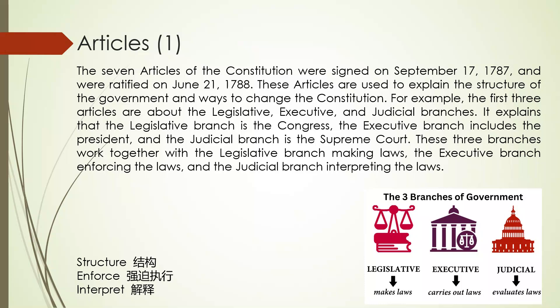正常速度. The seven Articles of the Constitution were signed on September 17, 1787 and were ratified on June 21, 1788. These articles are used to explain the structure of the government and ways to change the Constitution. For example, the first three articles are about the legislative, executive, and judicial branches. It explains that the legislative branch is the Congress, the executive branch includes the President, and the judicial branch is the Supreme Court. These three branches work together with the legislative branch making laws, the executive branch enforcing the laws, and the judicial branch interpreting the laws.